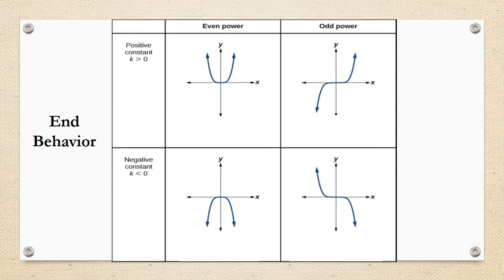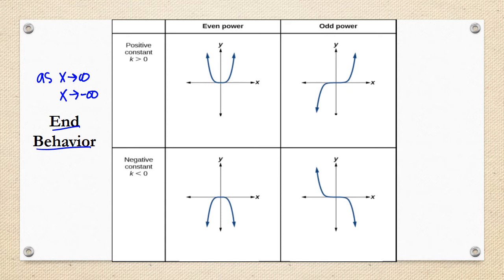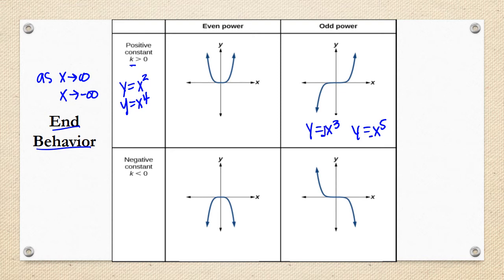Let's talk more about end behavior and what we mean by that. End behavior is basically what happens at the endpoints of your function. For polynomials, we're looking at what's going on as your x values approach positive infinity and as they approach negative infinity. In the examples on the last slide, all of our k values were 1 — we were looking at y = x², y = x⁴, y = x³, y = x⁵ — so that coefficient k was just positive 1.